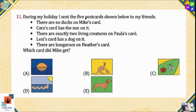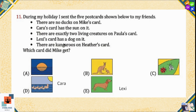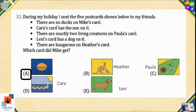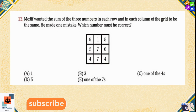Question number eleven: During my holiday I sent five postcards to my friends. There are no ducks on Mike's card, so he cannot take option D. Cara's card has the sun on it, so option D may be Cara's card since it has a sun as well. There are exactly two living creatures on Paula's card, so we consider option B or C for Paula. Lexi's card has a dog on it, so option E is for Lexi. Kangaroos are on Heather's card, so option B is for Heather and option C is for Paula. We are left with option A, which is Mike's card — and it doesn't have any duck on it.